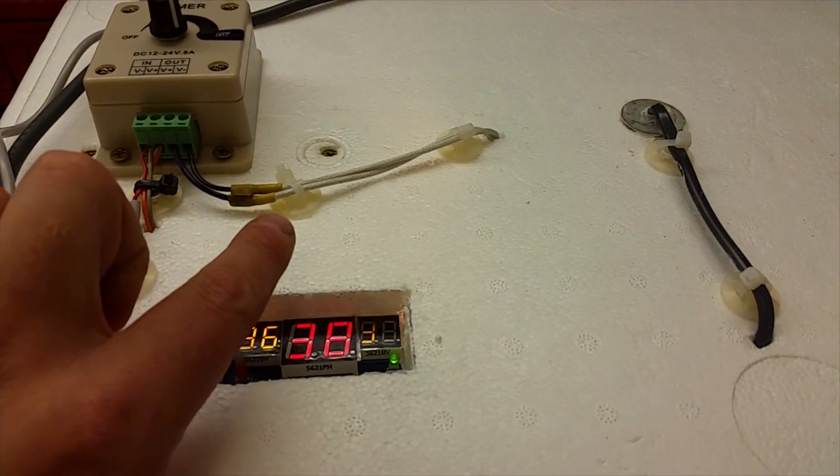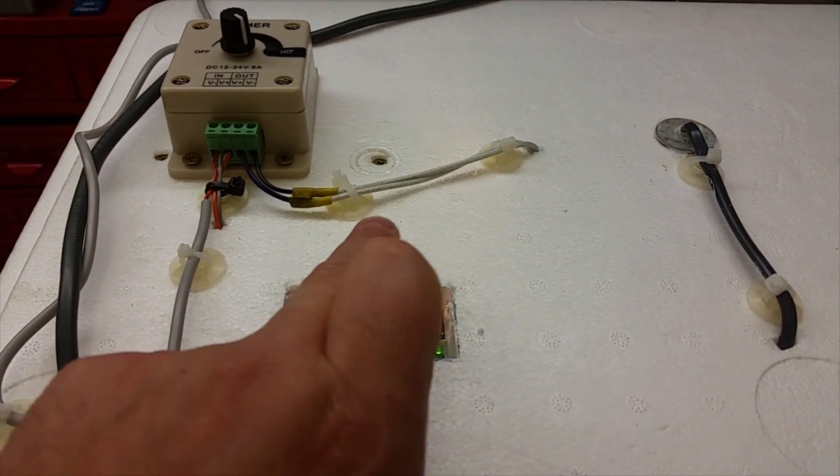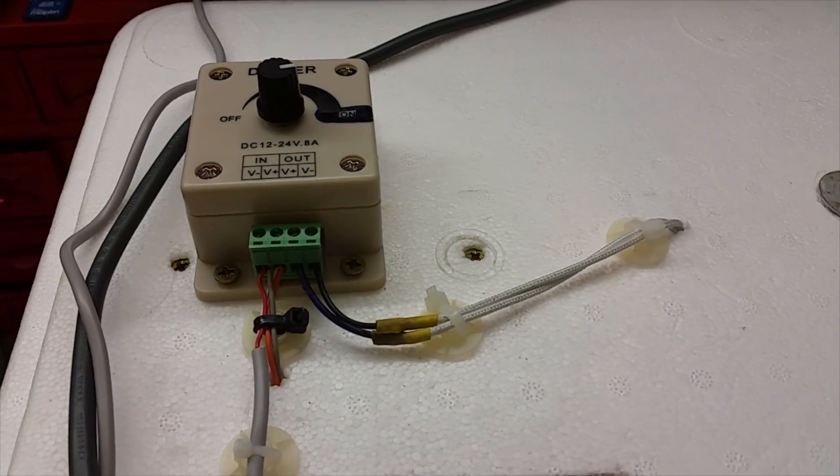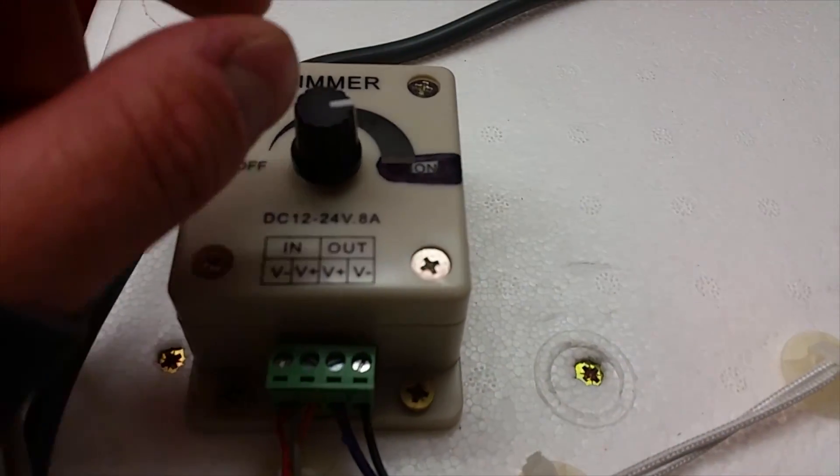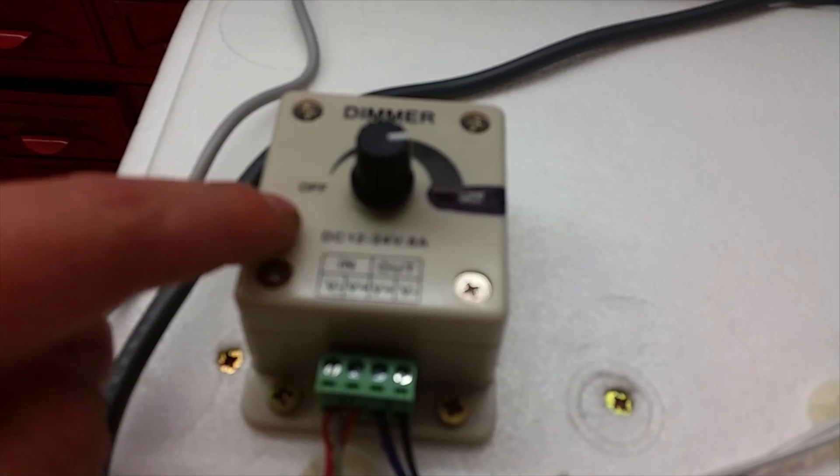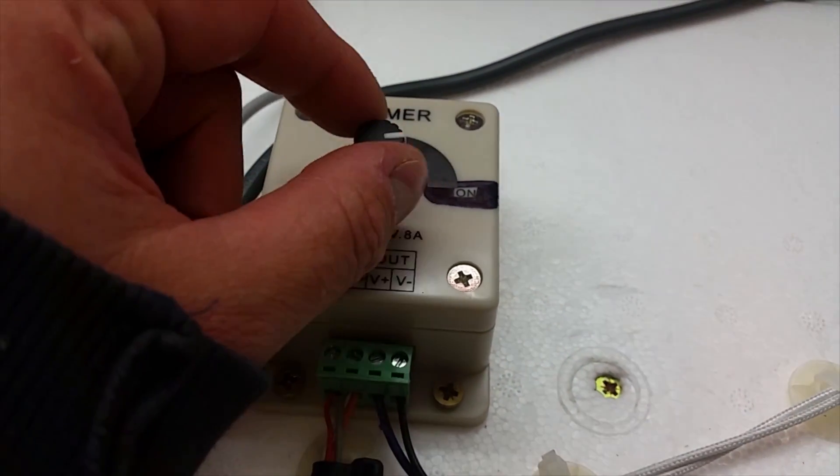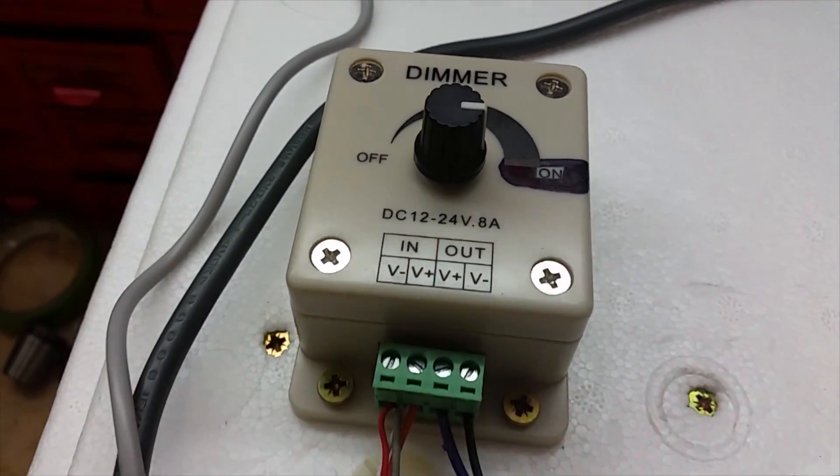So what we've got as well is we've got a 12 volt bulb here which we have permanently on. And we've got it permanently on and we've got it hooked up to this dimmer switch. Let's focus that.